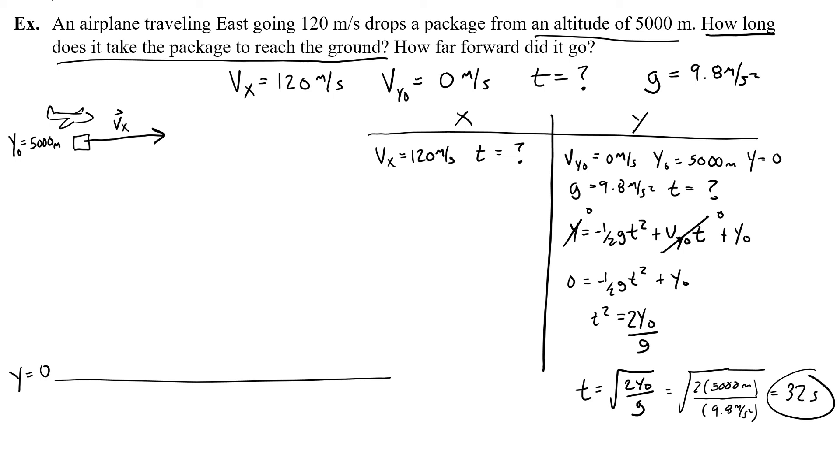Okay, so that's the first thing that it asks us to find, how long does it take to reach the ground? Which if I was going to draw the path of this projectile, it's going to be moving forward and going down, so it'll actually have a little bit of a parabola, half a parabola, and right up before it hits the ground, this will happen at 32 seconds.